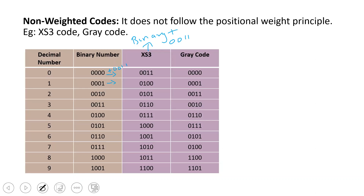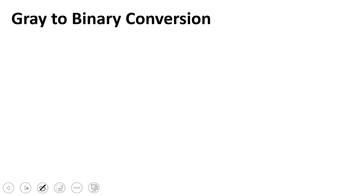Gray code is another non-weighted code. To convert gray code to binary code: for example, take gray code 1001. We perform XOR operations — the MSB of binary equals the MSB of gray, then each subsequent binary bit is the XOR of the previous binary bit and the current gray bit.